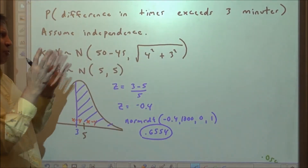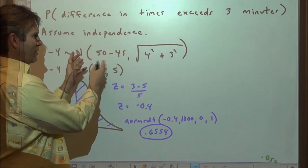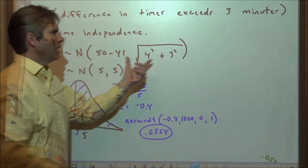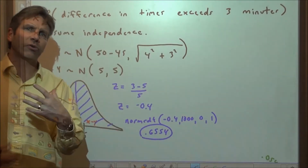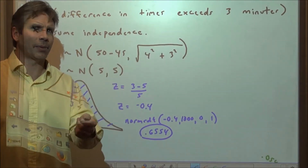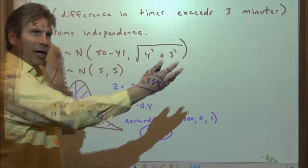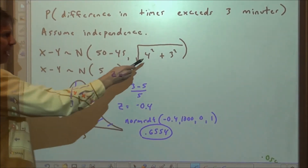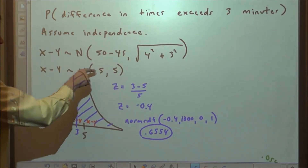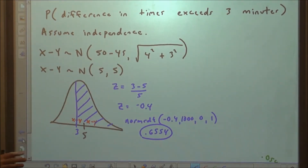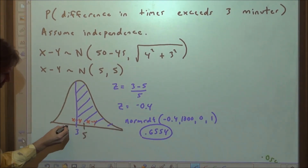Again the standard deviation of this difference distribution is still 5 — don't subtract the variances just because you're subtracting the times. Subtraction deals with what's happening on average at the center. The spread is how much variance you introduce each time you select a number. Variance and standard deviation are always positive values — you're not subtracting those. You still add the variances together and take the square root to get the standard deviation of 5.